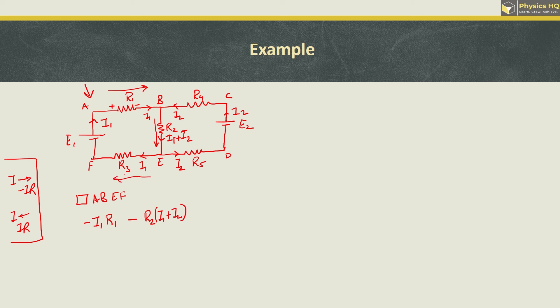While going from E to F, it's minus R3 into I1 because we are in the current direction. The first terminal is positive and the second is negative, so the second sign is minus. Lastly, while going from F to A, the second terminal is positive, so we take plus E1. The loop is complete, so this equals zero. Now we will simplify this equation.